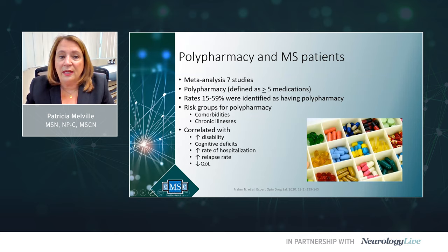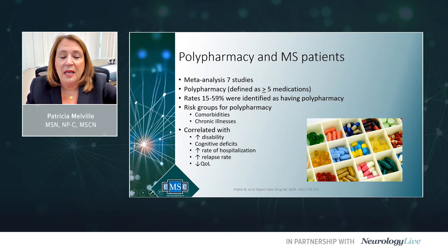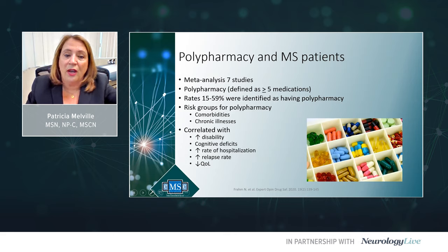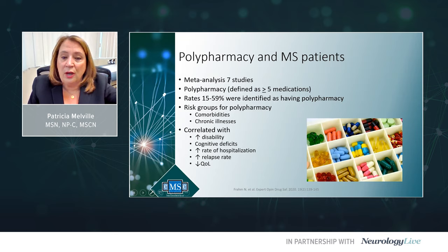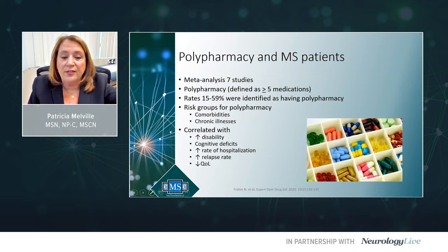MS patients with depression may have negative health behaviors — they may not be adherent to their medication, may be smoking, less likely to exercise, and more prone to substance abuse. Polypharmacy is another important phenomenon. A meta-analysis of seven studies, defining polypharmacy as five or more medications, found a rate of 15% to 59% across studies. Patients at risk for polypharmacy are those with multiple comorbidities and chronic illnesses. Polypharmacy is associated with increased disability, cognitive deficits, increased hospitalization, increased relapse rate, and decreased quality of life.